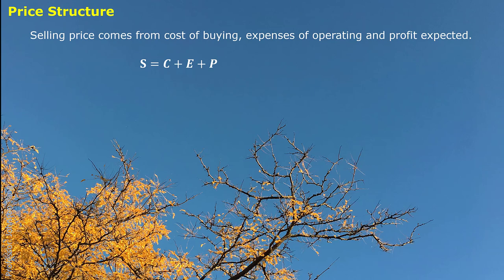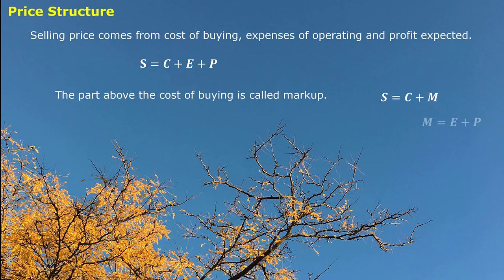Then we place ourselves in one of the supply chains and try to understand how we set up the selling price for each item we are managing. The selling price comes from cost of buying, expenses of operating, and the expected profit. The part above the cost of buying is also called markup. So the selling price can simply be expressed as cost of buying plus markup.